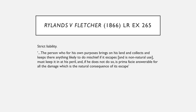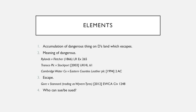Lastly we're going to look at the rule in Rylands v Fletcher. This has strict liability — it's where you have an isolated thing on your land, it escapes, and goes and causes damage onto someone else's land. There are five elements to this. There's the accumulation of dangerous things on the defendant's land which escape. In Rylands v Fletcher, water was stored in a reservoir, it burst and caused damage. In Stockport, similarly there was water in a pipe that escaped and caused damage. In Cambridge Water Co, chemicals used to dye leather seeped through the floor and contaminated the water.